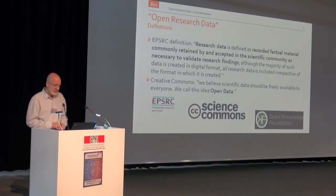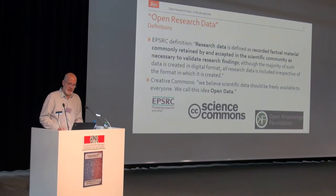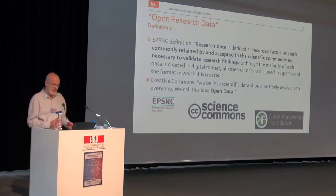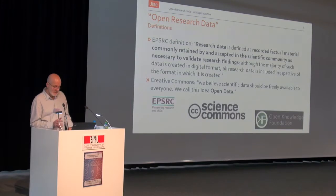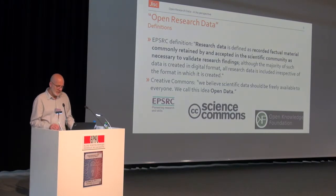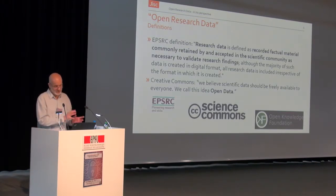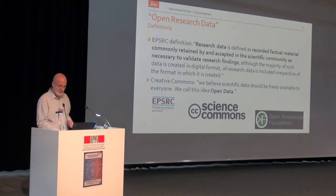I thought I'd start on research data by looking at a definition. The Engineering and Physical Science Research Council definition is about research data defined as the recorded factual material commonly retained by and accepted in the scientific community as necessary to validate research findings. Some of this is in digital format, but it's not really just digital data — there's a lot of data which isn't stored digitally. Creative Commons believes scientific data should be freely available to everyone, calling this open data. JISC promotes open access and open research, which enables open science — it's not just about the data, but by enabling open access to the data, we're promoting science and making it more open.